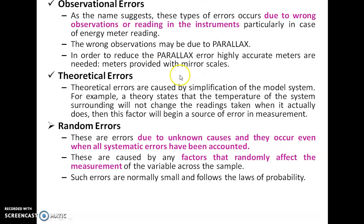Theoretical errors are caused due to wrong calculations. Random errors are due to unknown causes — systematic errors are caused by known causes, but random errors by unknown causes. Even after eliminating all systematic errors, random errors can still be present. They are very small in magnitude and cannot be eliminated in any measurement process. The factors that randomly affect measurement follow the Gaussian distribution.